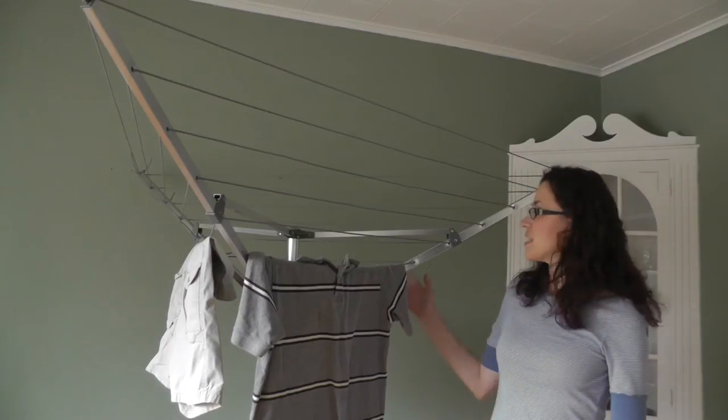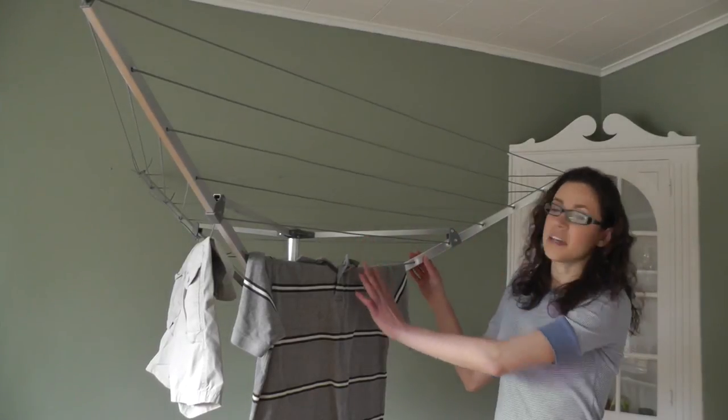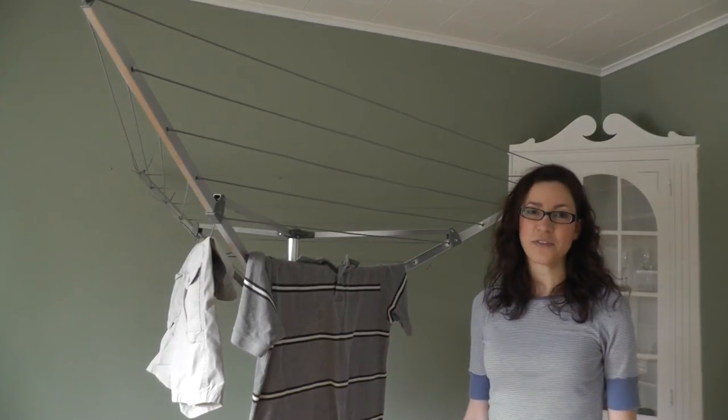This dryer has three sections, each with six lines, for a total of 64 feet of drying space, making it perfect for families.